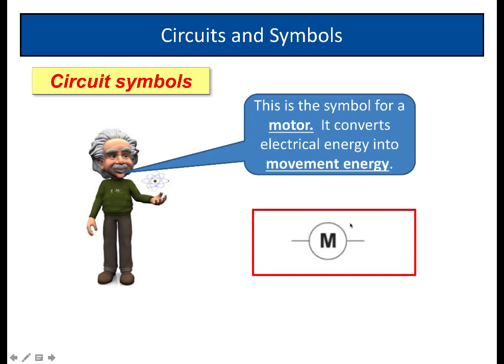And lastly, this is a symbol for a motor. So, it's a circle with an M in it. And what a motor does, it converts electrical energy into movement or kinetic energy. So, it could, for example, be in a hairdryer or a food mixer. That's a motor.